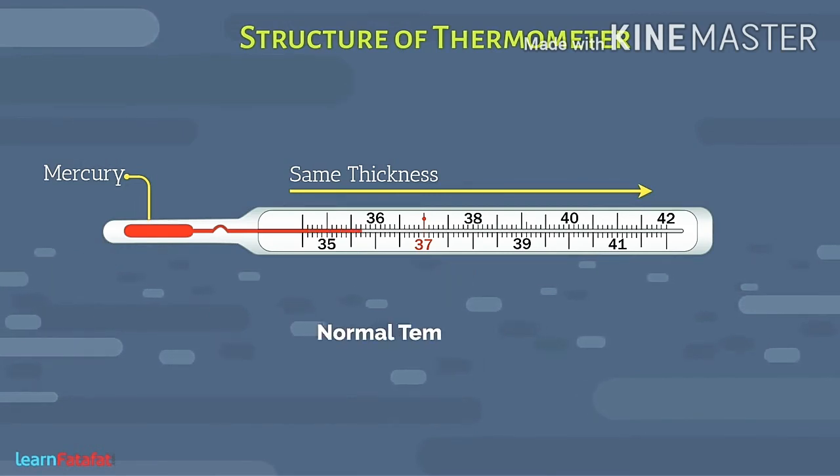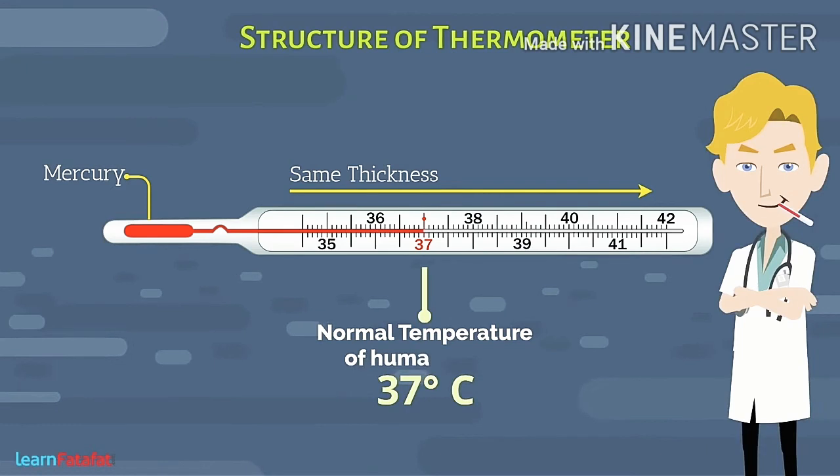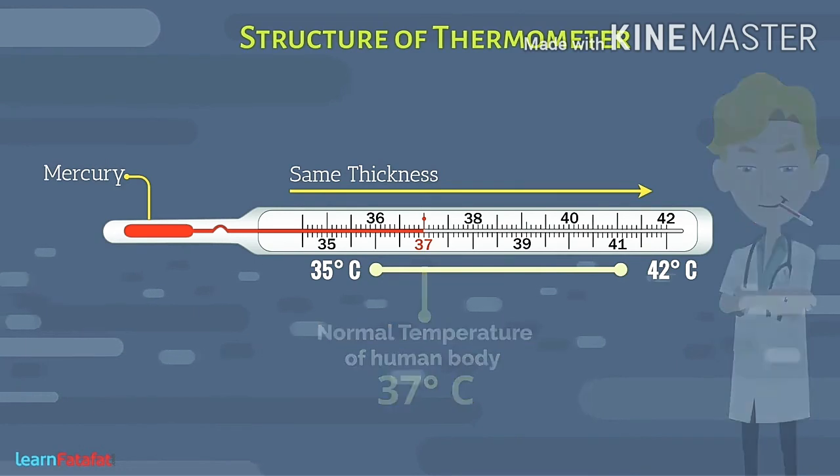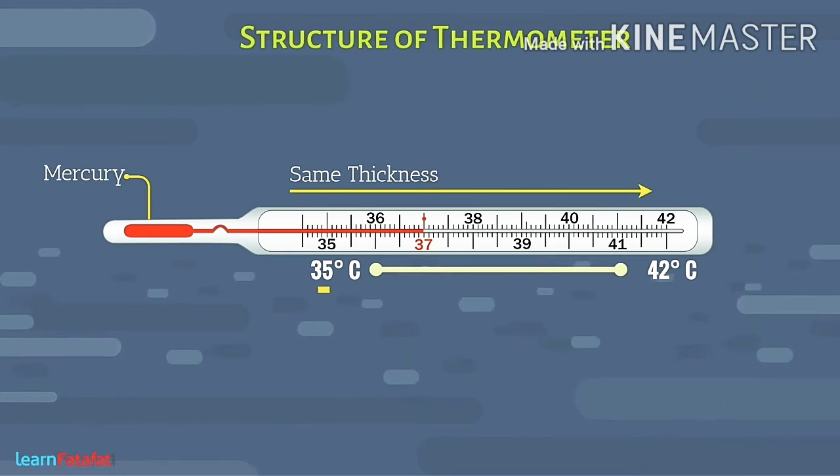The normal temperature of the human body is 37 degrees Celsius. How do doctors know that we have fever? Because if in the thermometer our body temperature is more than 37 degrees Celsius, then they know that our body temperature has increased and we have fever. Here 35 and 42 are the range numbers, and degree Celsius is the unit of temperature.